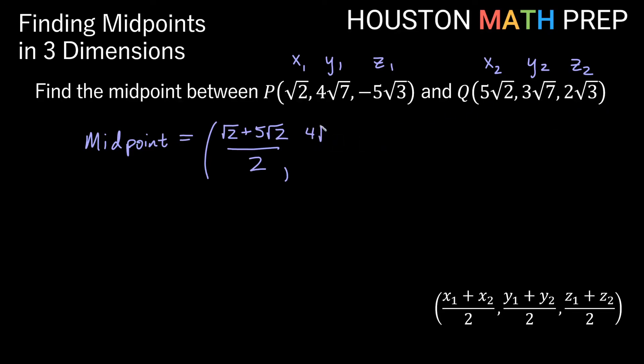Here we have 4 root 7 plus 3 root 7 over 2. And then we have negative 5 root 3 plus 2 root 3 over 2 for our z coordinate of the midpoint.